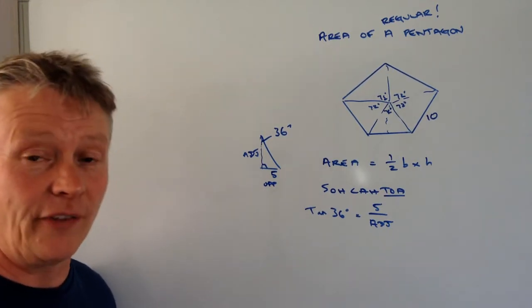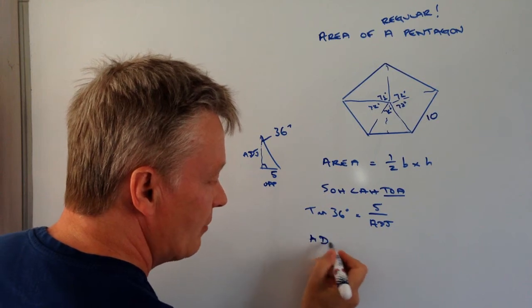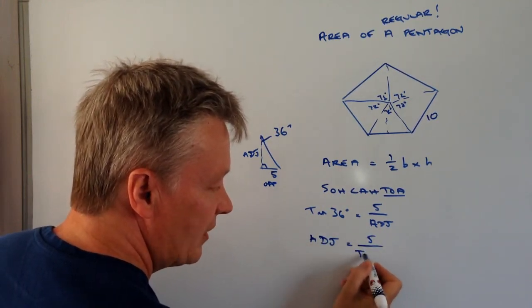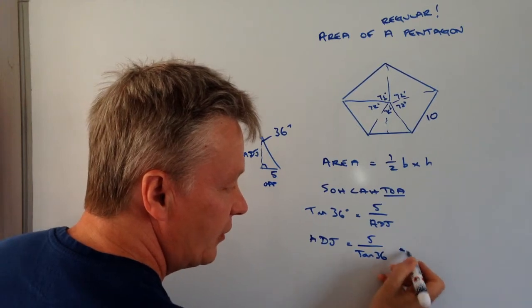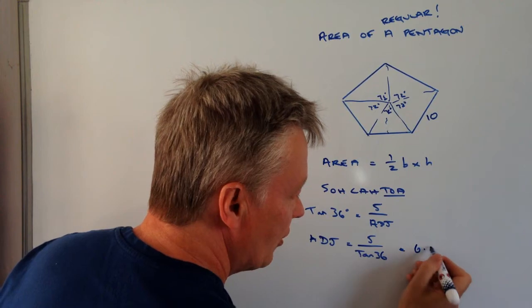And I can now use a little bit of algebra to be able to move these around. So I can pop that into my calculator as adjacent equals 5 divided by tan of 36. And if you do that, you're going to get 6.882.